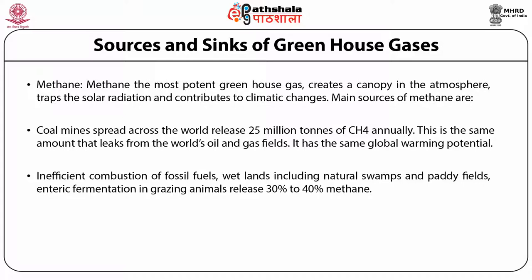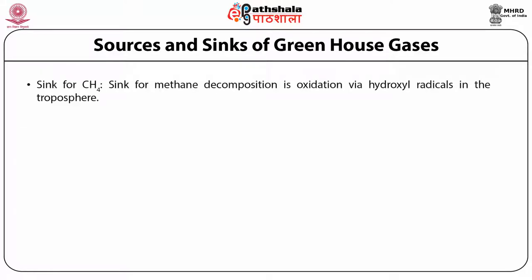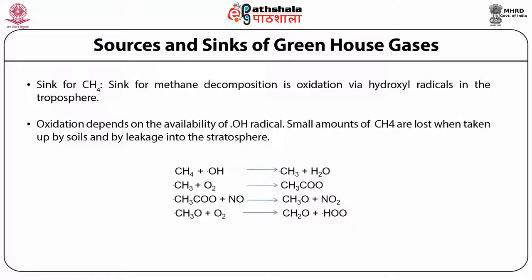One ton of methane suddenly burst out of the ocean 55 million years ago. Fossil records show that warming of the deep oceans would heat sediments enough to release trillions of tons of methane, which can lead to a global shift in carbon isotopes. The sink for methane decomposition is oxidation via hydroxyl radicals in the troposphere. Small amounts of methane are also lost when taken up by soils and by leakage into the stratosphere.